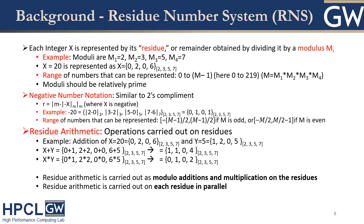Next, I would like to talk about the Residue Number System, RNS. In RNS, each number is represented by its remainders when divided by a set of moduli. Here is an example: if we choose the moduli set as 2, 3, 5, and 7, then the number 20 is represented as (0, 2, 0, 6), derived by computing 20 mod 2, mod 3, mod 5, and mod 7 respectively. All numbers in the range from 0 to the product of the selected moduli minus 1 are unique. To maintain this uniqueness, the selected moduli should be pairwise coprime. We can also represent negative numbers in RNS, similar to 2's complement.